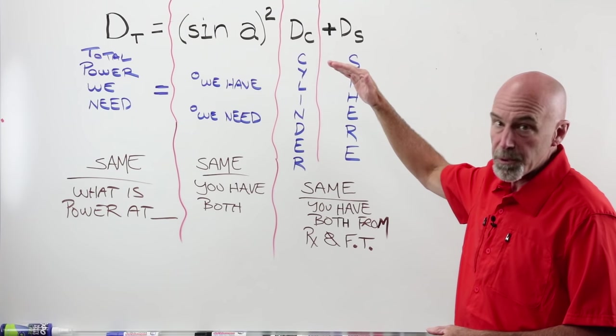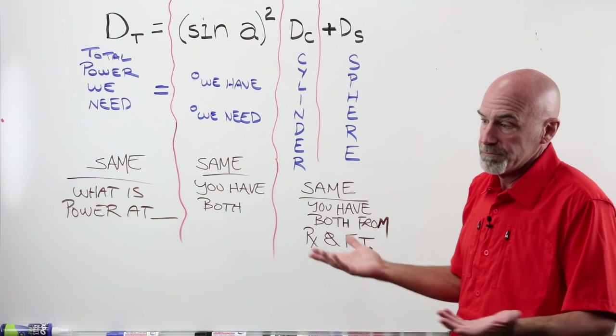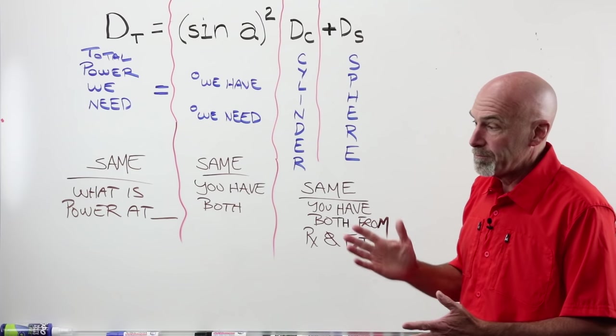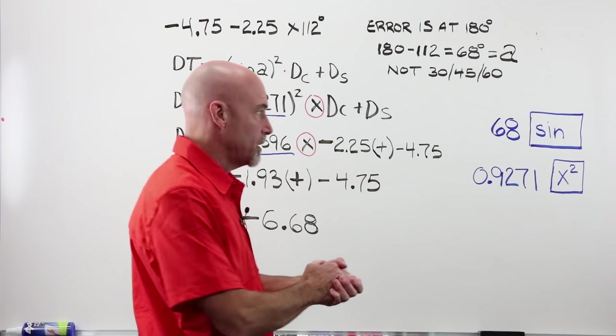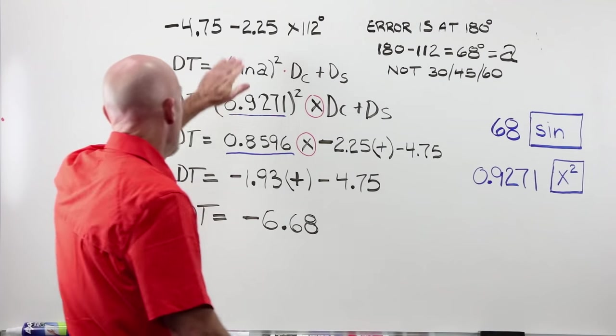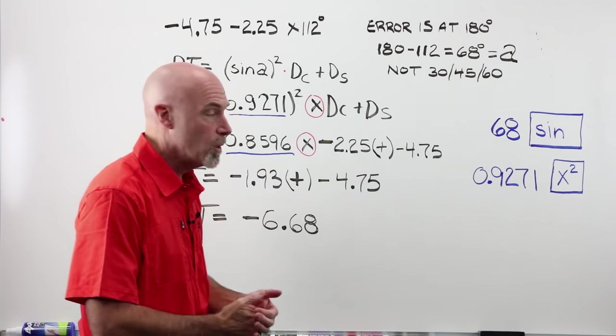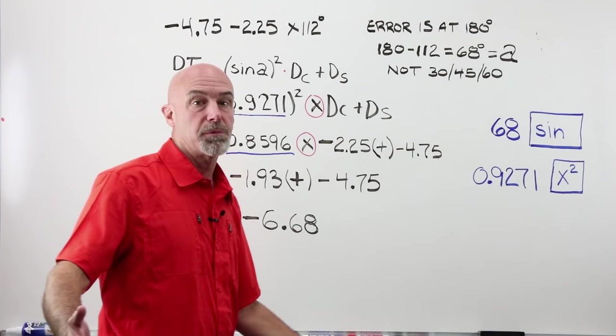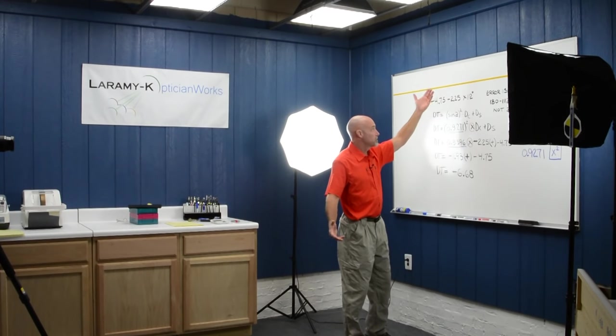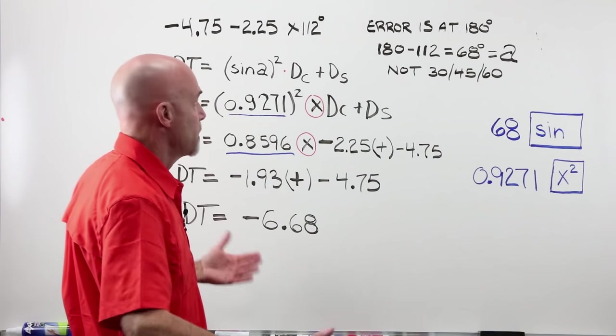We're going to do three examples. We're going to do them step by step. We'll talk through them a little bit and you'll get a handle on it and be able to work these. Then we can move on to prism. All right, example number one for Power in Oblique Meridians formula. We have a prescription minus 4.75 minus 2.25 at axis 112. A completely ordinary and extremely realistic prescription. You'd stock this lens. It may very well be in the back. You could fill this prescription. Send somebody out the door. You might see this thing all day long. Just ordinary prescription.